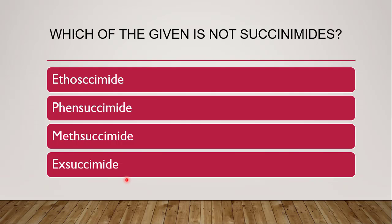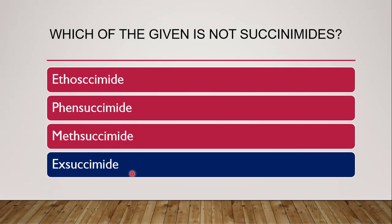Next question: which of the given is not a succinimide — ethosuximide, fensuximide, methsuximide, or exsuximide? The correct answer is exsuximide, because the succinimide class includes ethosuximide, fensuximide, and methsuximide.